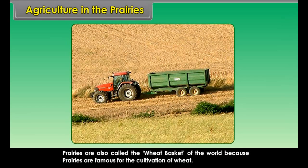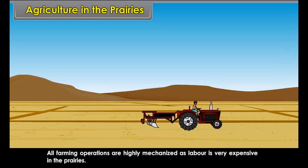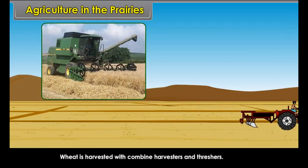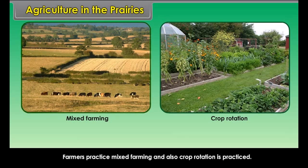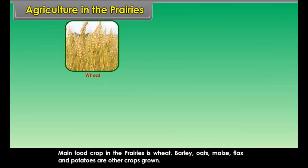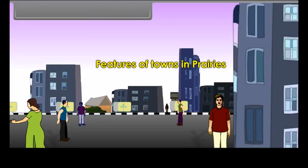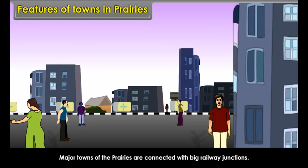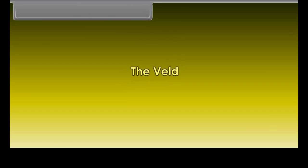Agriculture in the Prairies: Wheat farming is the main agricultural activity. Prairies are known as the granaries of the world and the wheat basket of the world due to huge surplus of wheat production. All farming operations are highly mechanized as labour is very expensive. Wheat is harvested with combined harvesters and threshers. Farmers practice mixed farming and crop rotation. The main food crop is wheat; barley, oats, maize, flax and potatoes are the other crops grown.